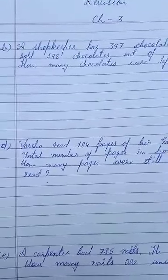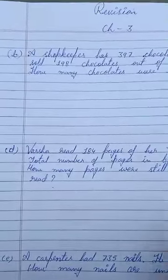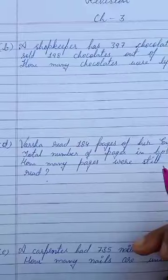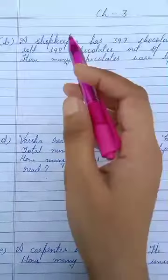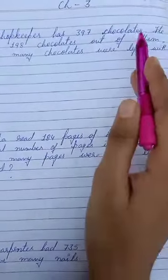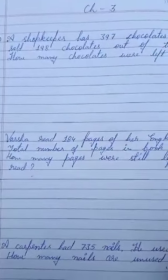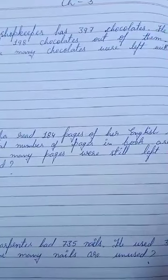And today I am going to start question number B. These questions are word problem questions. Question number B is: a shopkeeper has 397 chocolates. He sold 198 chocolates out of them.